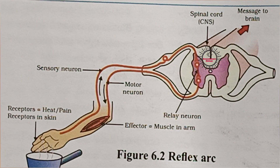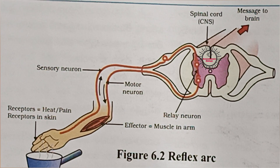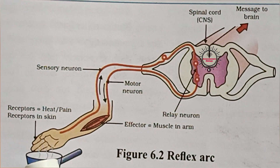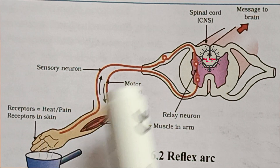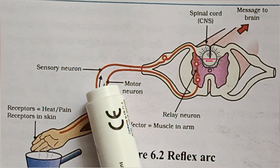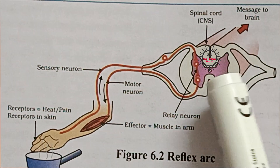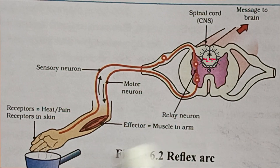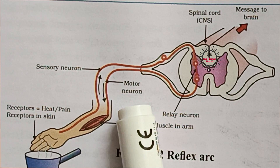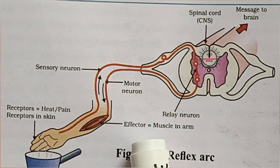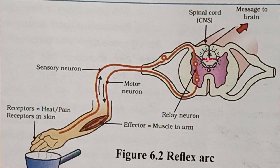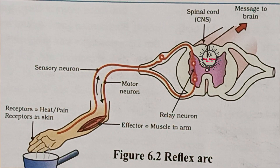The reflex arc contains five components. First, the receptor. Second, the sensory neuron. Third, the relay neuron. Fourth, the motor neuron. Fifth, the effector organ. These are the five components of a reflex arc.